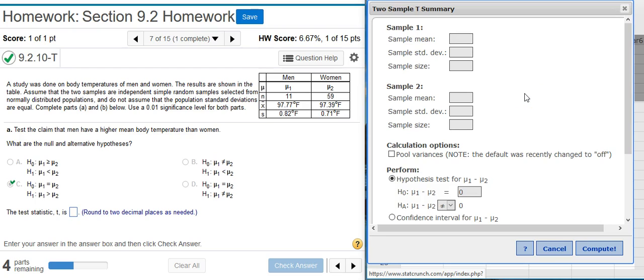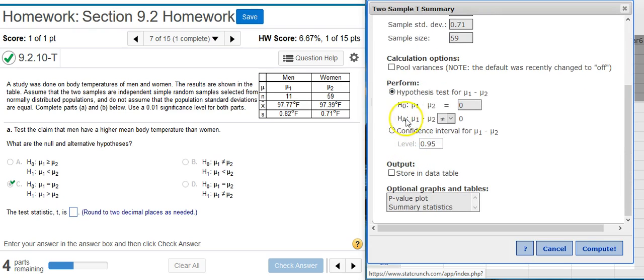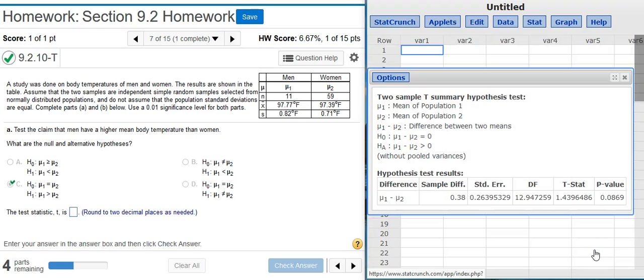With summary, because we are not given actual data, just summary statistics. Here in my options window, I am going to put in the summary stats that were given there next to the problem statement. So sample 1 is for the men, and sample 2 is for the women. Notice this box next to pool variances is unchecked by default. This is what we want, so we are going to leave that alone. The default radio button selection is also for the hypothesis test, so I am going to leave that. Make sure that this alternative hypothesis matches what we selected previously. And away we go. Hit compute. And here we have our results window.